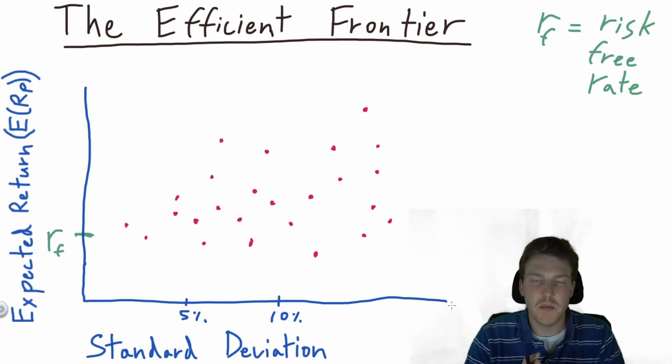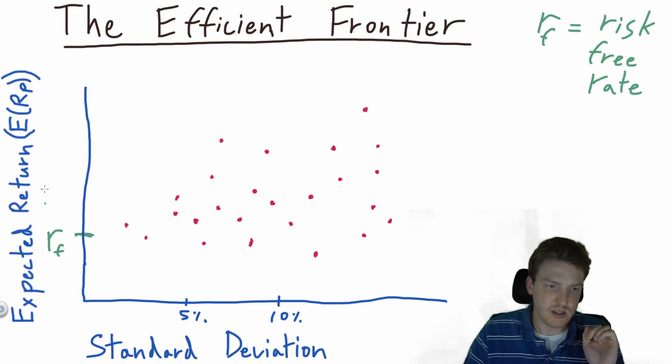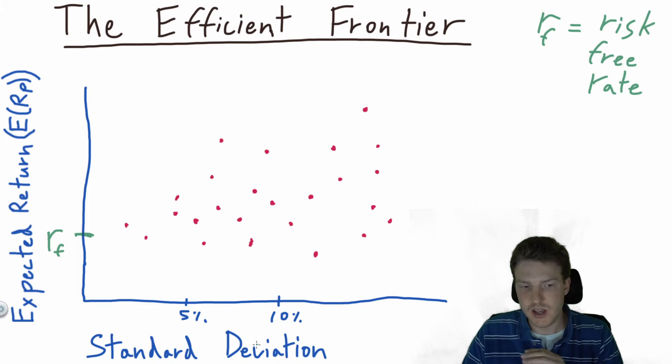A key element of the Modern Portfolio Theory is the efficient frontier. What we have here is a graph with the expected return on the y-axis. So as you increase vertically, this represents a higher expected return. And then on the x-axis, we have the standard deviation. Remember, standard deviation is the measure of risk of the portfolio.